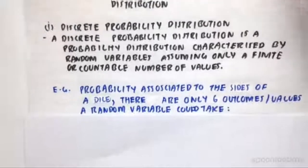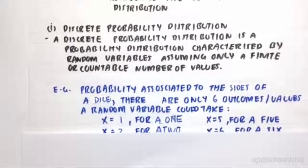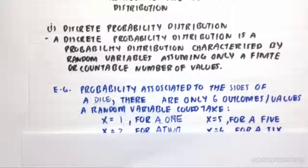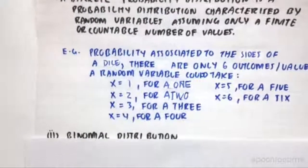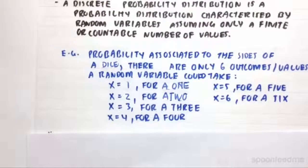For example, the probability associated with the sides of a dice - there are only six possible outcomes in the sample space that are countable. A random variable could take on values: x equals 1 for rolling a 1, x equals 2 for rolling a 2, x equals 3 for rolling a 3, x equals 4 for rolling a 4, x equals 5 for rolling a 5, and x equals 6 for rolling a 6.